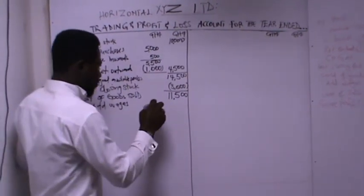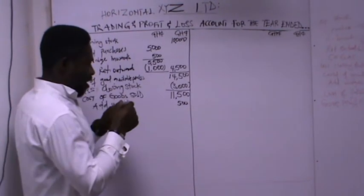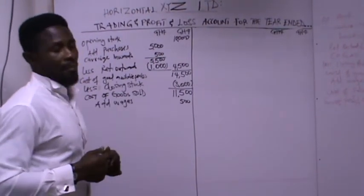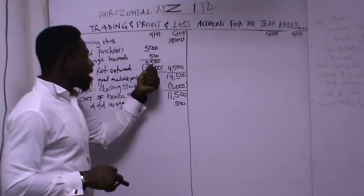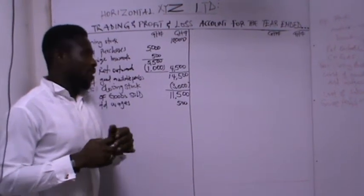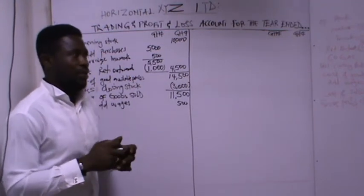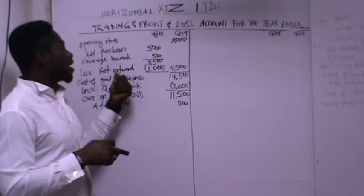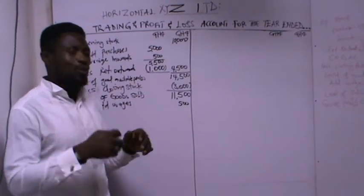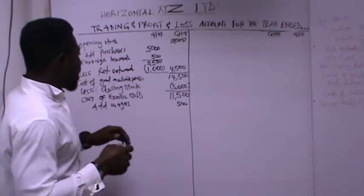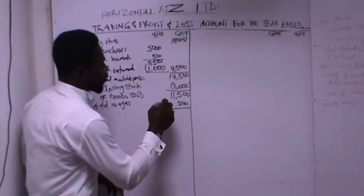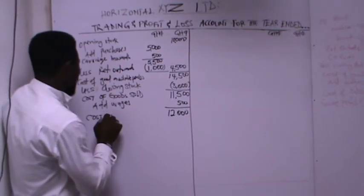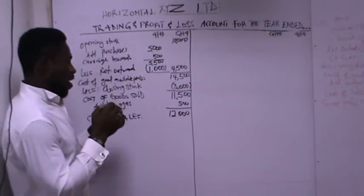Our wages are 500 Ghana cedis. Take note: if there are stock drawings by the owner, you take those out before deducting returns outwards to get your net purchases. When you add the wages to your cost of goods available for sales, you get 12,000 Ghana cedis — and this becomes our cost of sales.